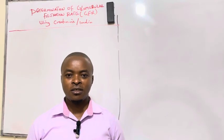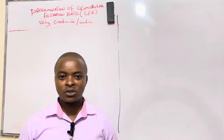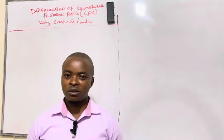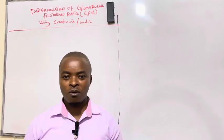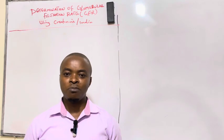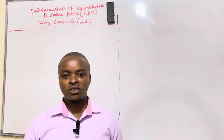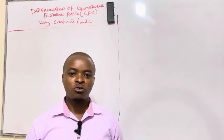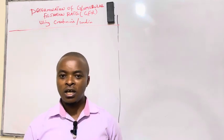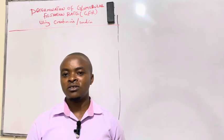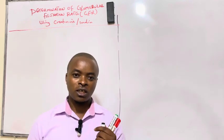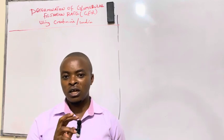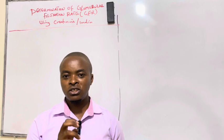Welcome to this session at Medical Sciences Made Easy by Naptarim Humza. Please remember to hit the subscription button. This session will look at determination of glomerular filtration rate. We want to use endogenous substance creatinine, but we can also use exogenous substance that is inulin. Those are the two substances we can use to determine GFR.